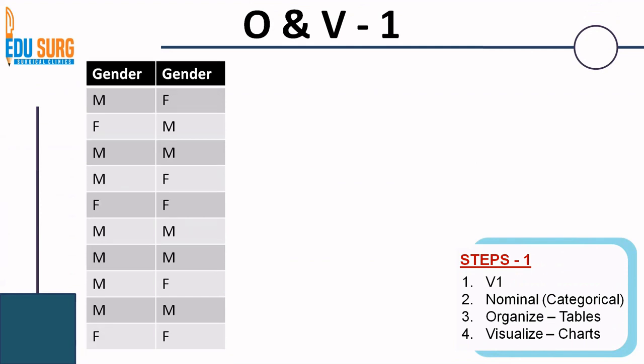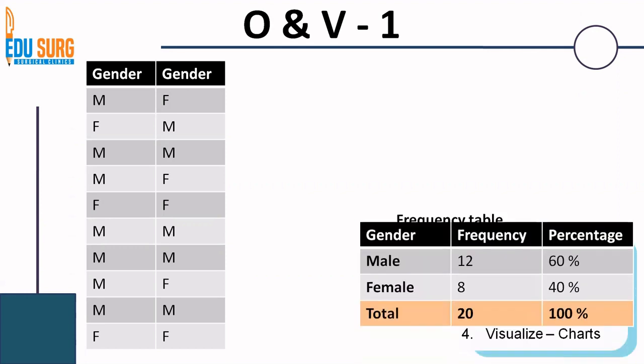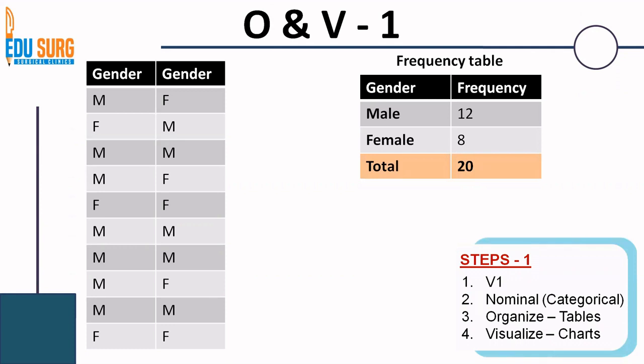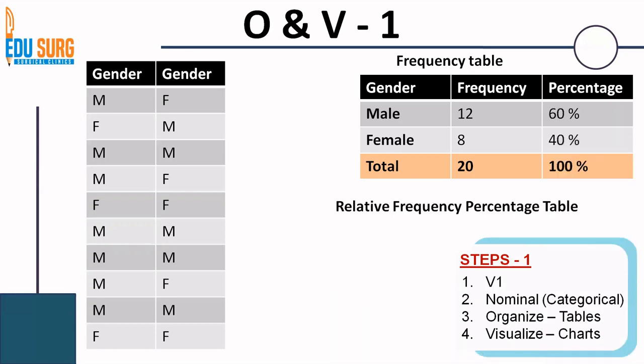Suppose you are taking the gender of patients in your study. This is a nominal data — male or female categories — and 20 patients have been selected. How to organize this data? Very easy. You can organize it using a frequency table: there are 12 males and 8 females. Compared to the random data that is presented to you first, this table is very easy to understand — males are more than females. Another way to express this is in percentage, which is known as a relative frequency percentage table. You can see that 60% are males and 40% are females. This is how you can organize a very random nominal or categorical data into a frequency table or a relative frequency percentage table.